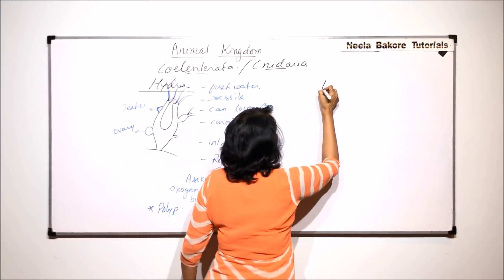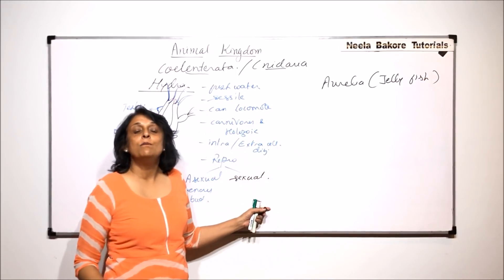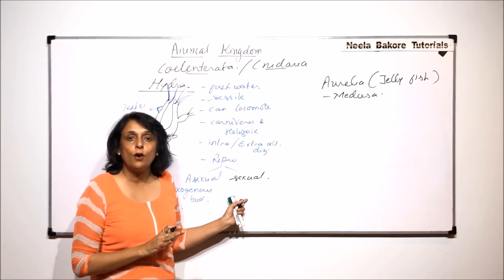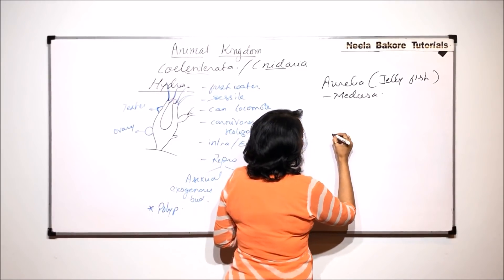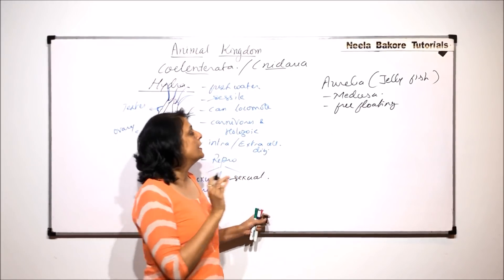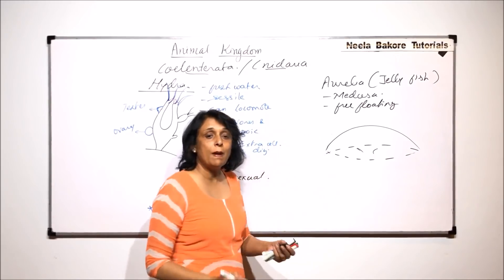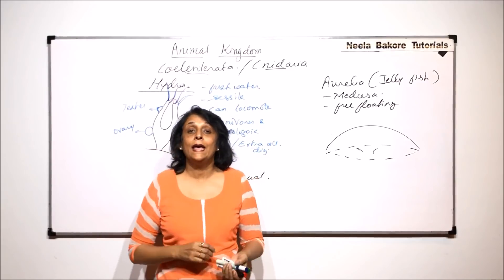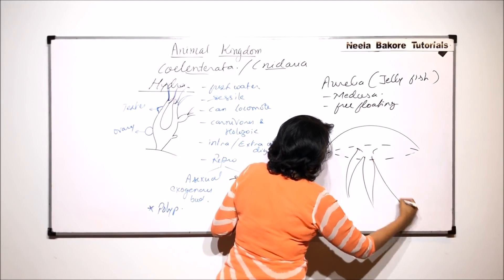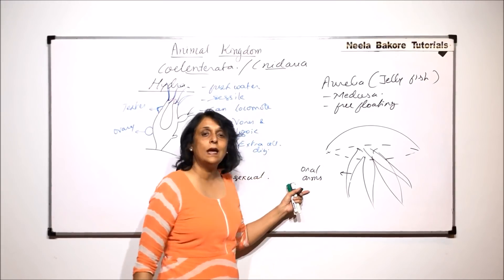The other example we are talking of is Aurelia, which is commonly known as jellyfish. They have an umbrella-like body — that is, a medusa form — and medusa is the predominant form in Aurelia. The body is umbrella-like and they are free-floating. They also have tentacles, but in a different arrangement. The mouth is on the lower side and is surrounded by four arms called oral arms, because they surround the mouth.